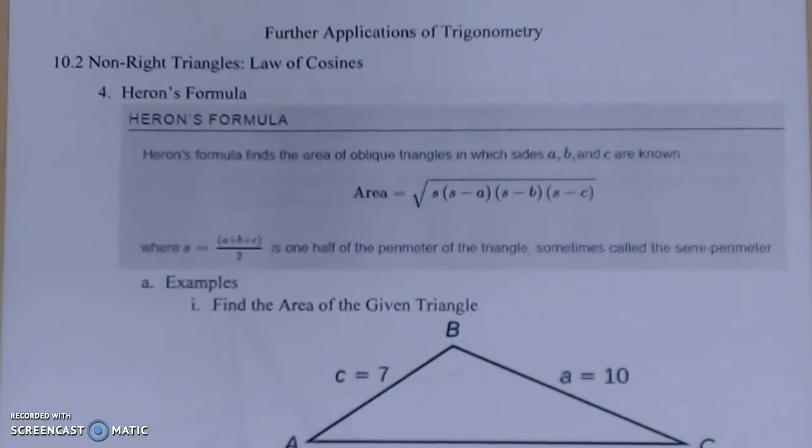In this section, we've been working with the law of cosines, which applies when you are given side, side, side and need to find other information. But we also pick up Heron's formula, which finds the area of an oblique triangle when you're given three sides.